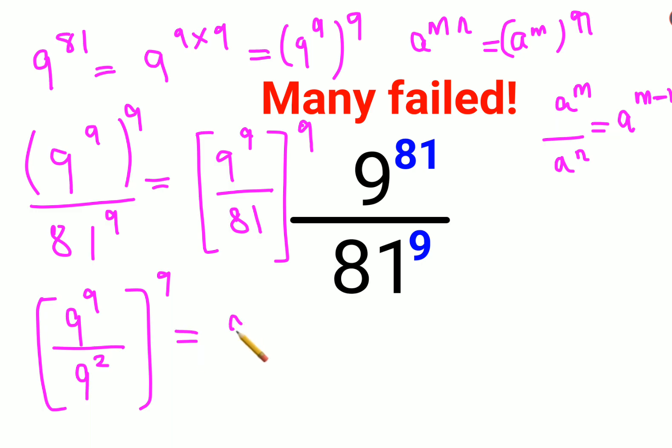So this can now be written as 9 raised to 9 minus 2, everything raised to 9. So eventually this becomes 9 raised to 7, the whole raised to 9.